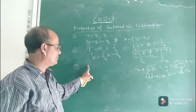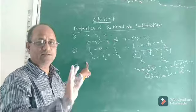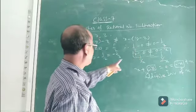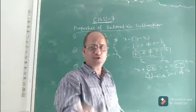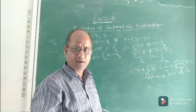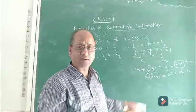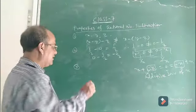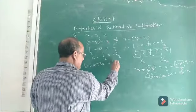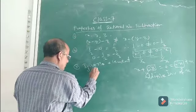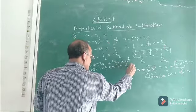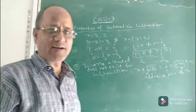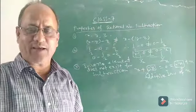Now let us see whether inverse element exists for subtraction. In subtraction, there is no question of inverse element, because since identity element does not exist — as I just explained, x minus 0 is not equal to 0 minus x — there is no identity element for subtraction of rational numbers. Since there is no identity element for subtraction, there is no question of inverse element. Therefore, inverse element does not exist for subtraction of rational numbers.